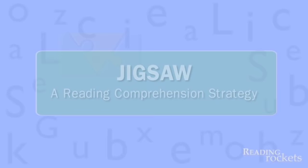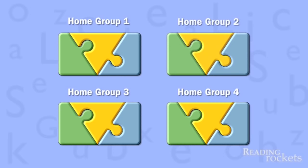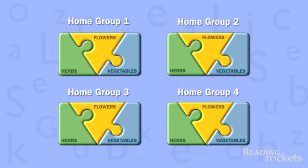Before we jump into the classroom, let's break down all the steps involved. First, students start in their home groups. Each student has a different text, but all readings are related to the same main topic — for example, gardening.